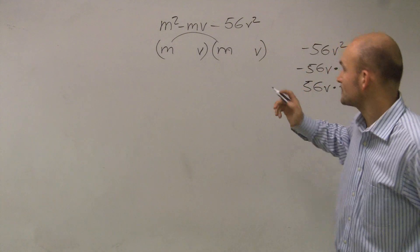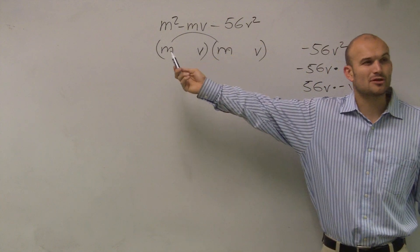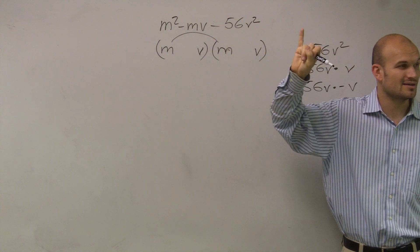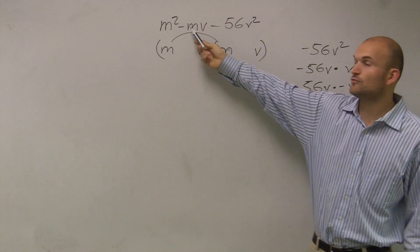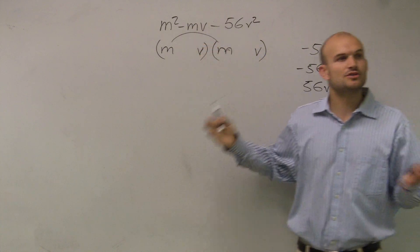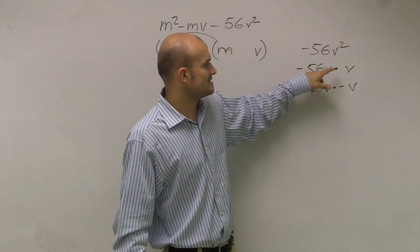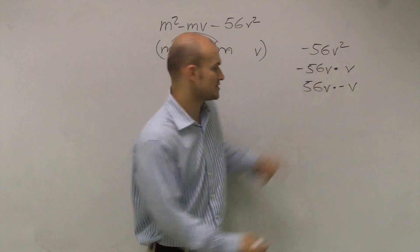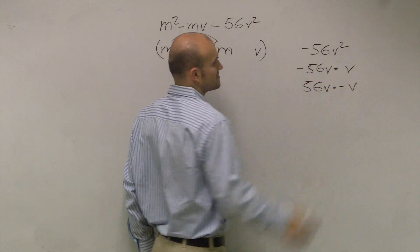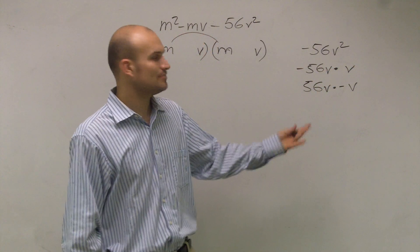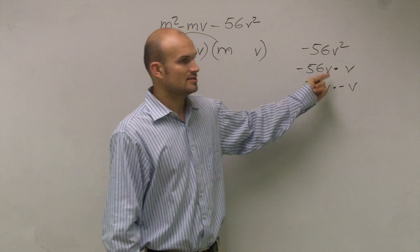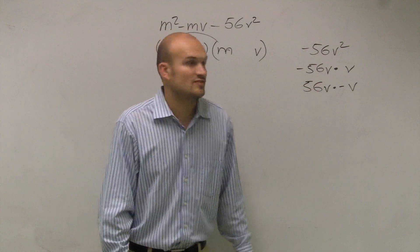Now, what Husto was looking at was, he looked at my middle term and he said that middle term is only negative 1, right? It's all that middle term is. There's a negative 1 in front of that mv. So I need to find two numbers that multiply to give me negative 56. Well, if I did negative 56, remember you have to add these to find your middle term, negative 56v plus positive v is just going to give me a negative 55v.